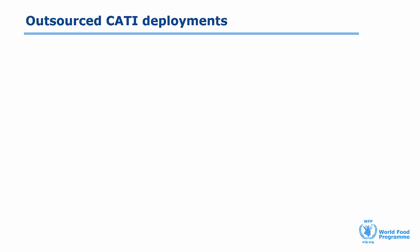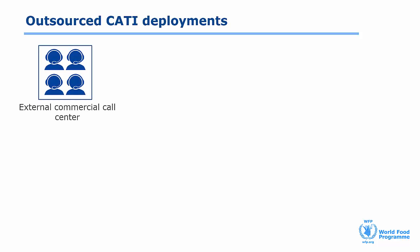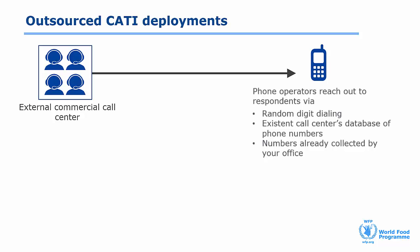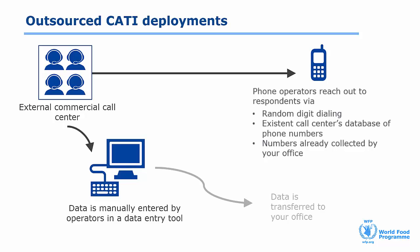For outsourced CATI deployments the call centre will be hosted externally. If conditions allow, this is the recommended solution. Depending on your target sample, the call centre will dedicate a certain number of phone operators to your activities. The phone operators will reach out to respondents via random digit dialing, phone numbers already collected in your partner's database, or phone numbers your office already has. At the end of the survey, anonymised data is transferred to you in a safe and secure way. It is very important that the contract ensures data confidentiality and that no sharing of personally identifiable information occurs. When using an external commercial call centre, choosing the right partner is crucial, and the document 'Scoping Out a Commercial Call Centre' provides guidance on how to select them.